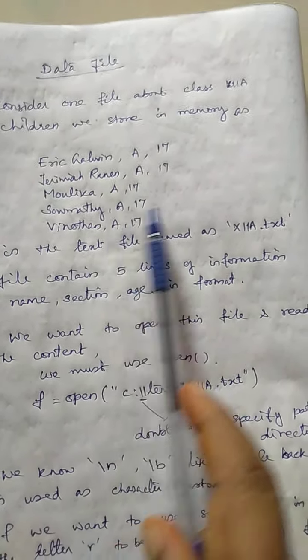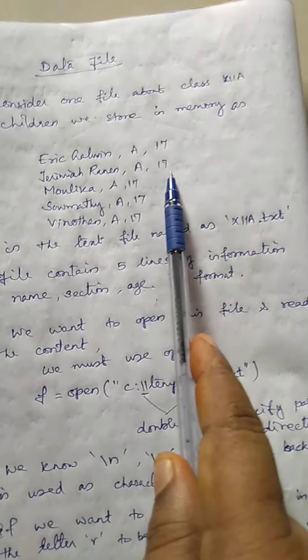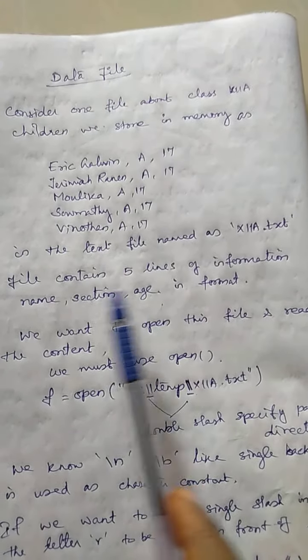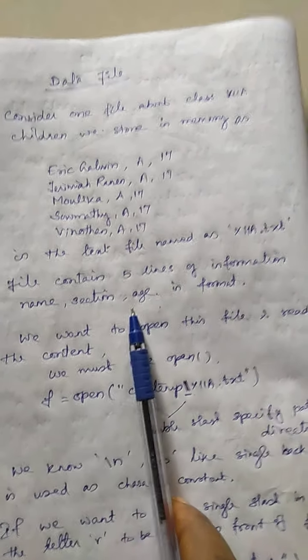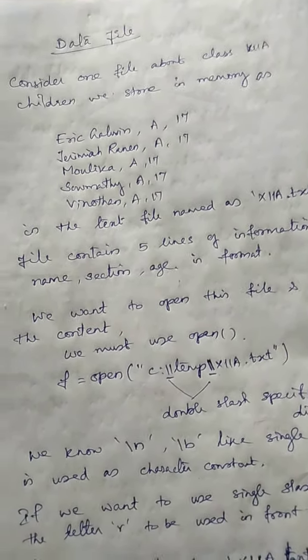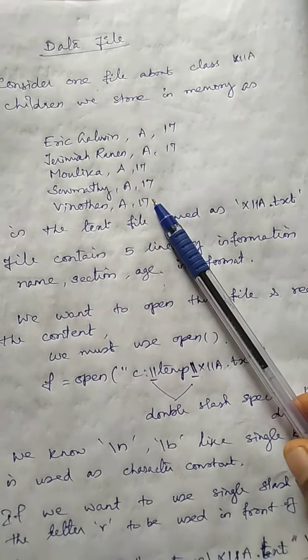Okay. So the file contains five lines because after this one it comes to the next line. So five lines of information. It is having some of the characters. That is in the form of name and sex and age. Okay. Now we want to open. This file is stored in our C colon temporary folder. Now we want to open this file.